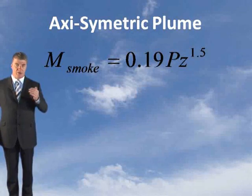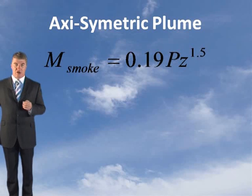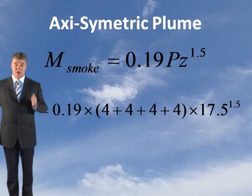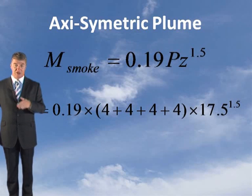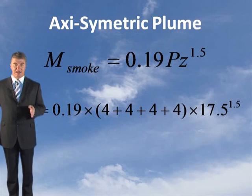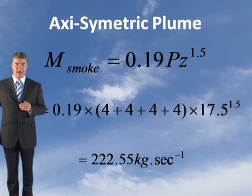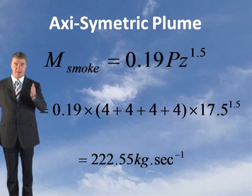Substituting into the formula: M_smoke equals 0.19 times the perimeter (4 + 4 + 4 + 4 = 16 metres) times 17.5 to the power of 1.5. This gives 222.55 kilograms per second, which is the mass flow rate.